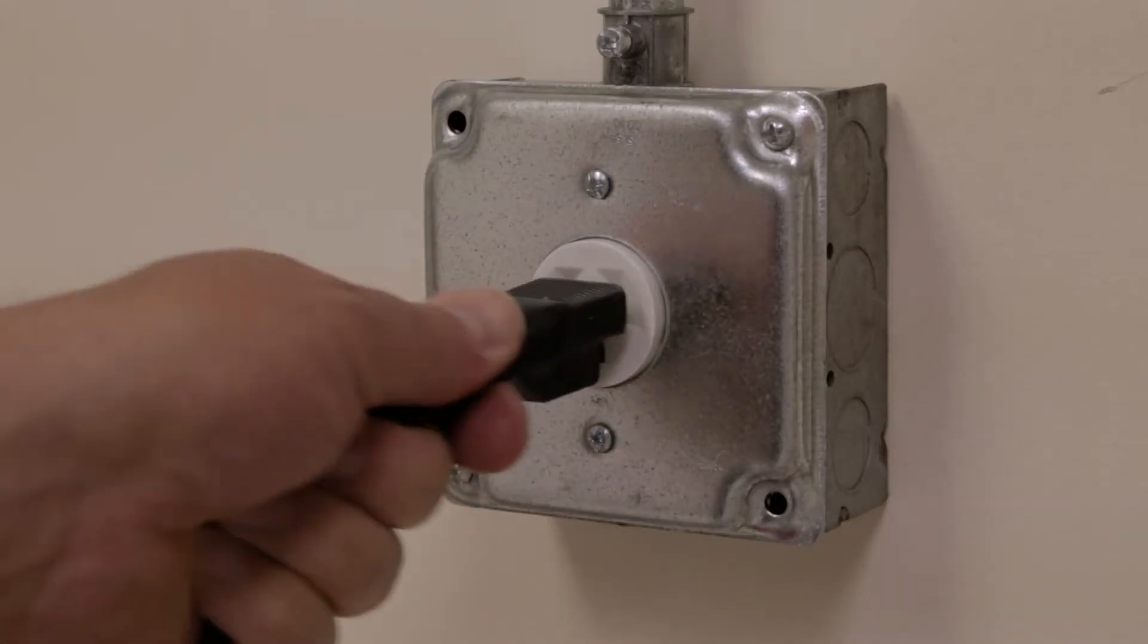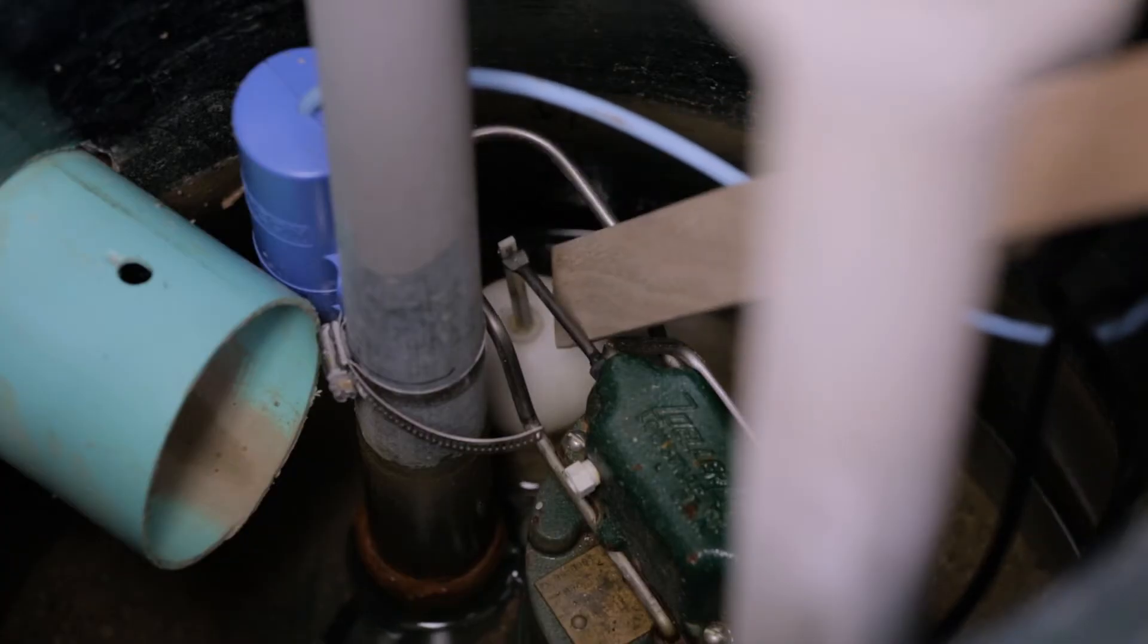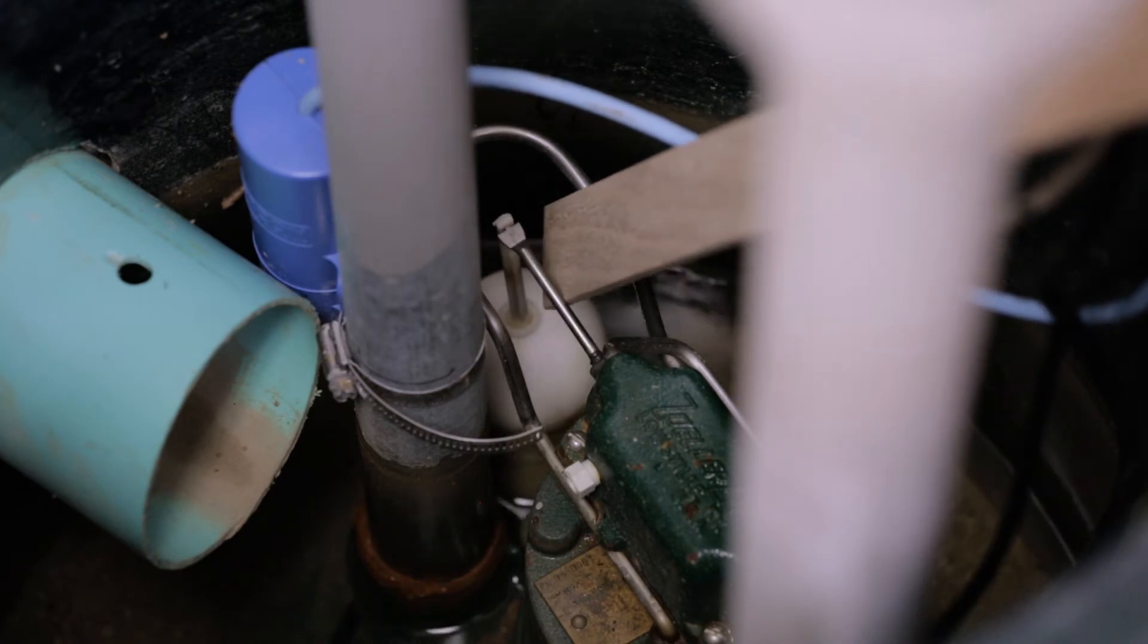Now plug the AC sump pump into the wall outlet. In the event excess water is in the pit, manually activate the primary AC sump pump float switch to pump any residual water from the pit.